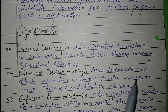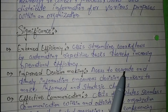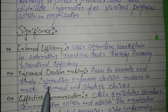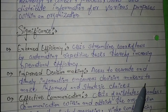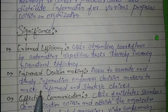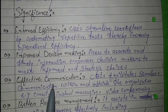Second is improved decision making. With the help of computer based information systems, we can easily take decisions. Access to accurate and timely information empowers decision makers to make informed and strategic choices.